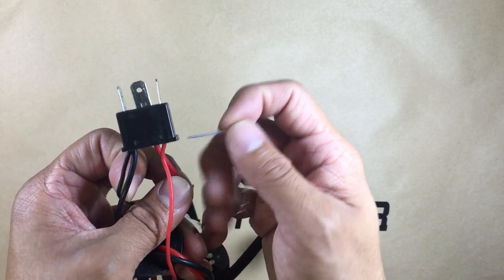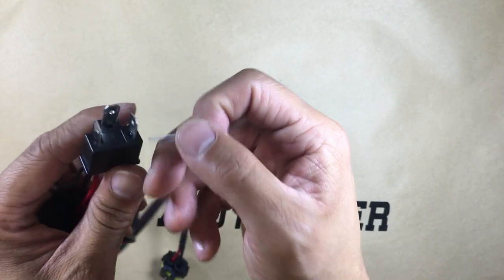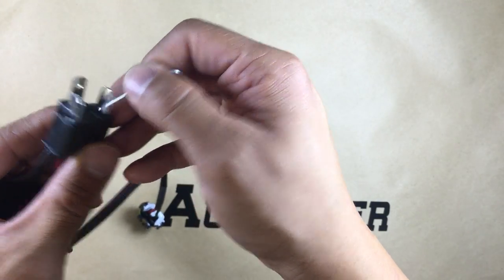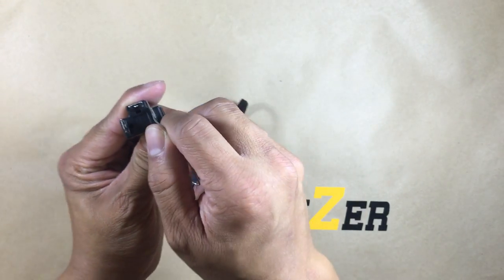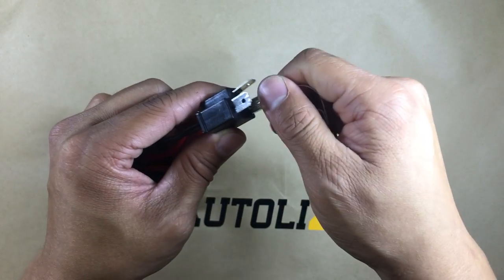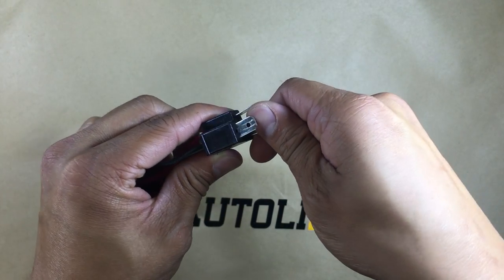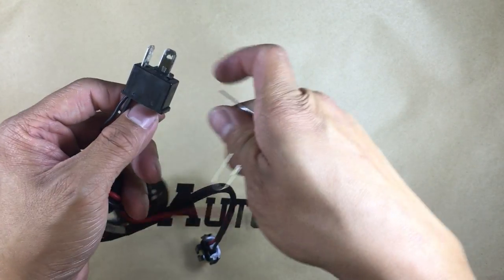Alright, this is how you do it. You get a paperclip and then you stick it in this little hole right here. There's a little hole right here. Press down and pull back and it should release.